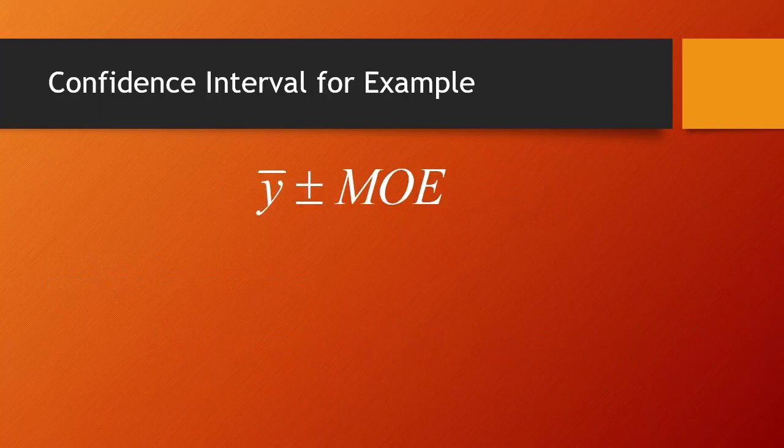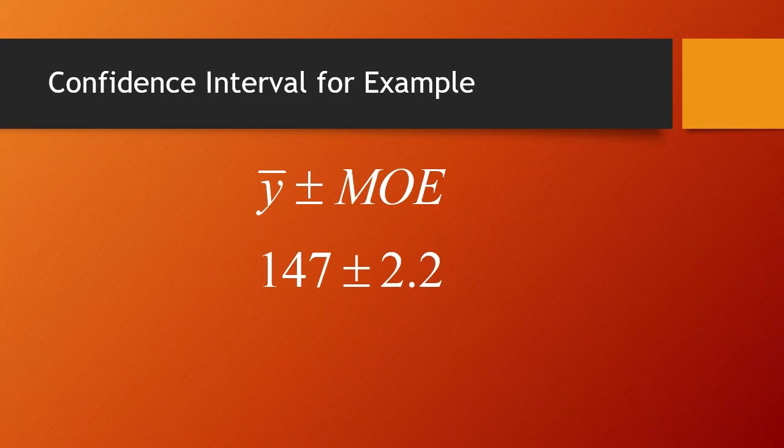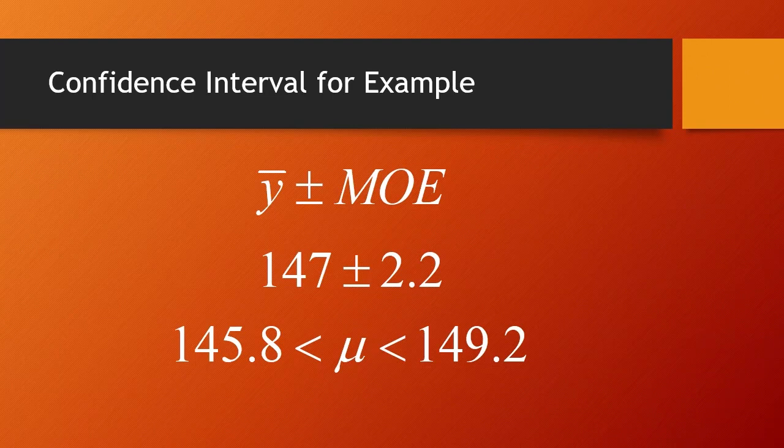So, if I take the formula for a confidence interval, which is the sample mean plus or minus the margin of error, I would take 147 and add and subtract 2.2. That gives me an interval from 145.8 to 149.2. Our 95% confidence interval for the population mean is between 145.8 and 149.2.